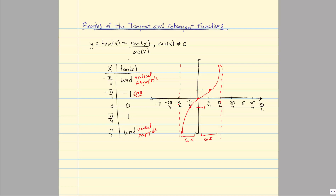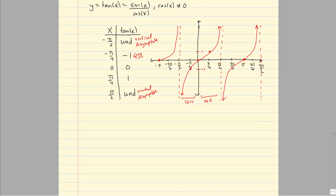These vertical asymptotes are lines the tangent function gets closer and closer to but never crosses. There is a vertical asymptote at every odd multiple of π/2. This same exact graph is going to repeat itself — here it crosses, here it has a vertical asymptote at the odd multiple 3π/2, and it repeats to the left as well. So this repeats over and over again, and we should be able to talk about the domain, range, period, and other properties.